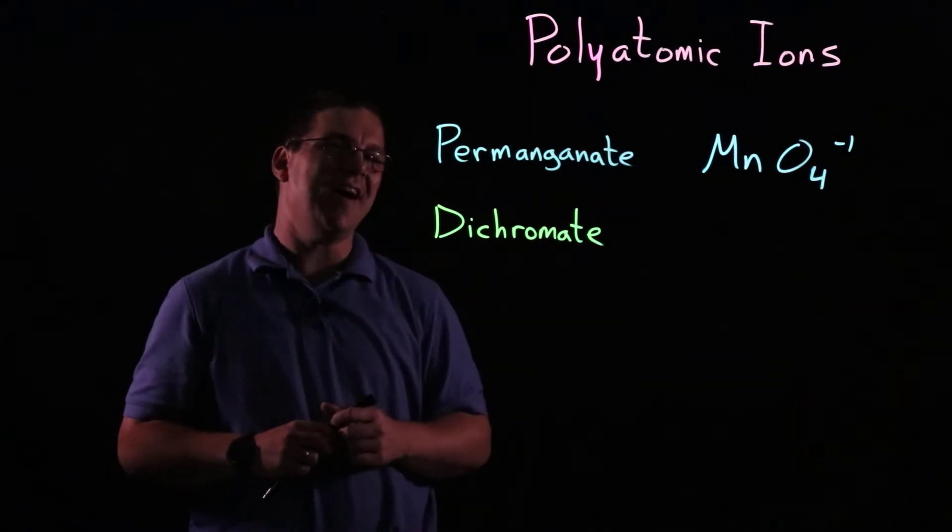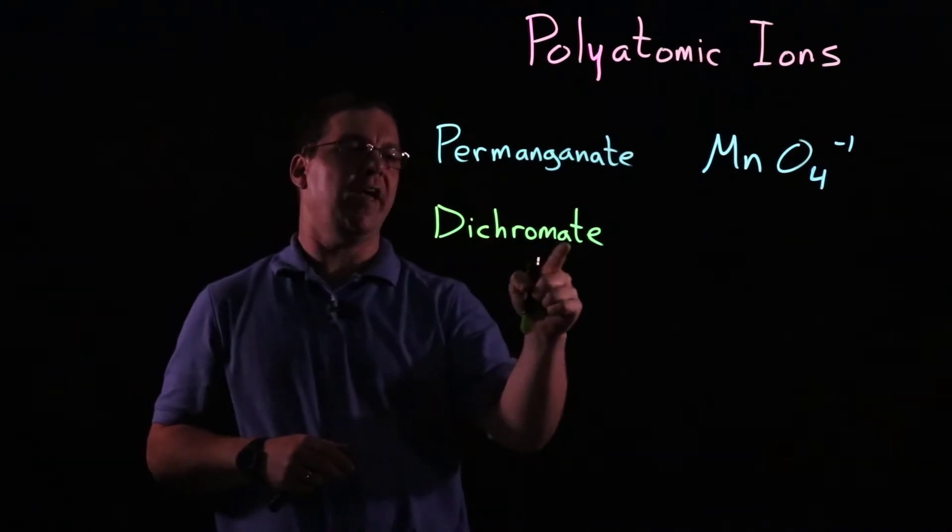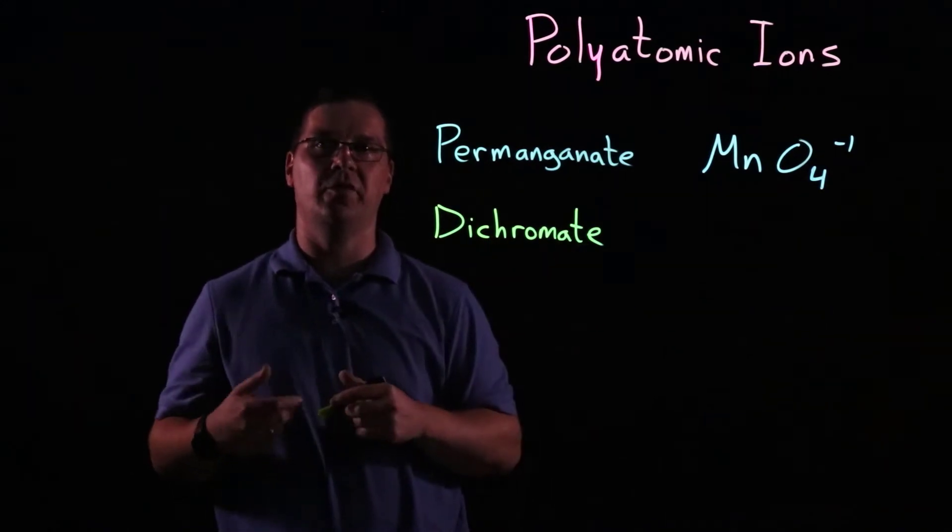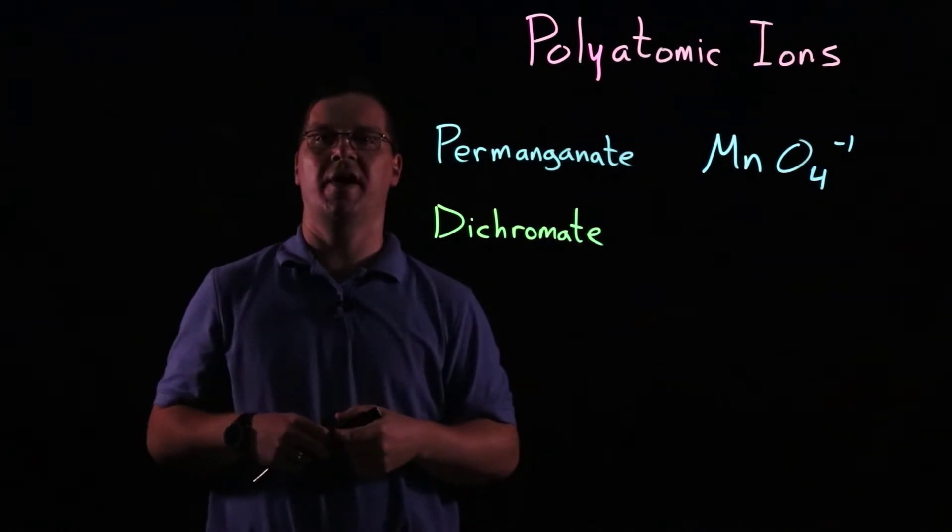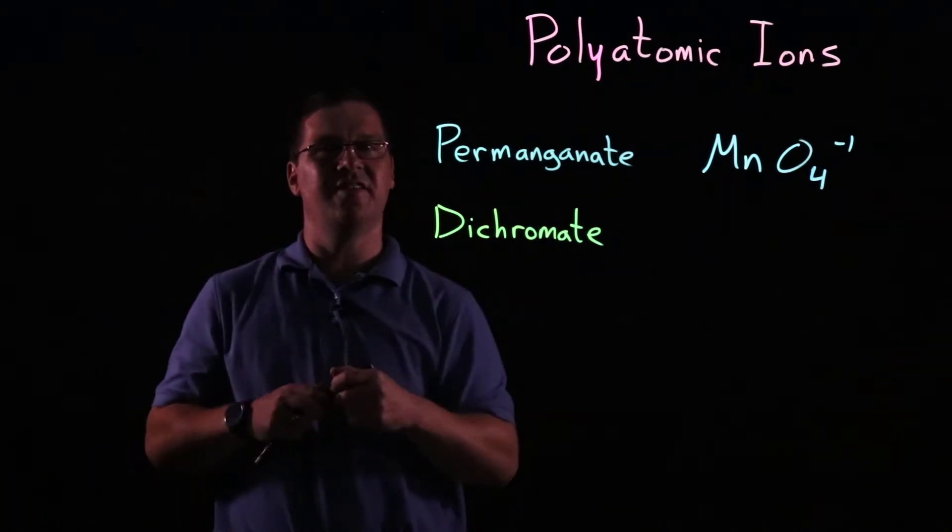If we take dichromate, part of this should sound familiar. Chromate, we had in the first set. That was C-R-O-4 with a minus two charge. So the only difference here is the prefix di.